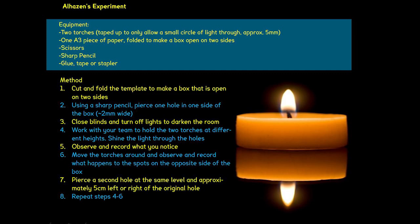After you've done all that, pierce the second small hole at the same level and approximately five centimeters to the side right or left of the original hole and repeat steps four to six, observing what you see.